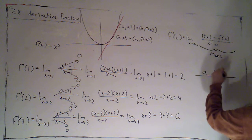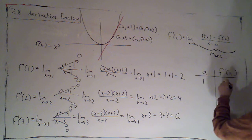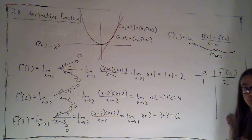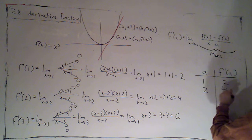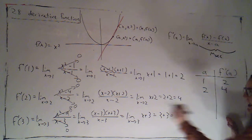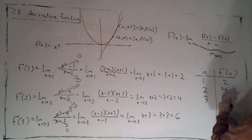So I can create this table of values. When a was 1, f prime of a was 2. When a was 2, f prime of a was 4. When a was 3, f prime of 3 was 6.